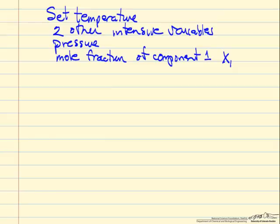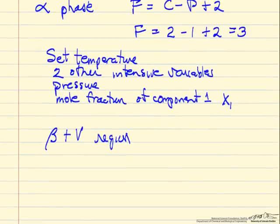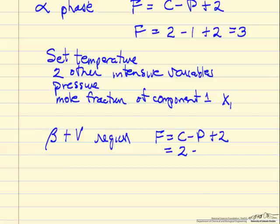Look at a different example, let's say the beta phase plus vapor. We're going to look at the region where we have vapor in equilibrium with the beta phase, and we're going to apply again the phase rule. So number of degrees of freedom, we have two components, now we have two phases, so we have two degrees of freedom.